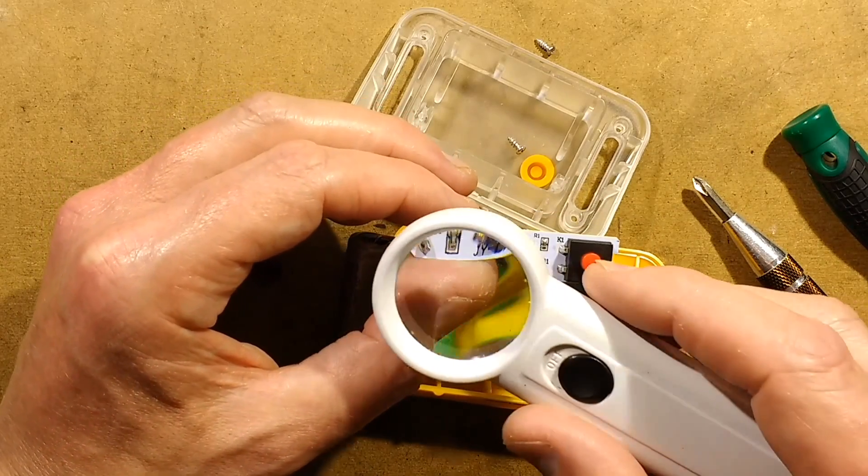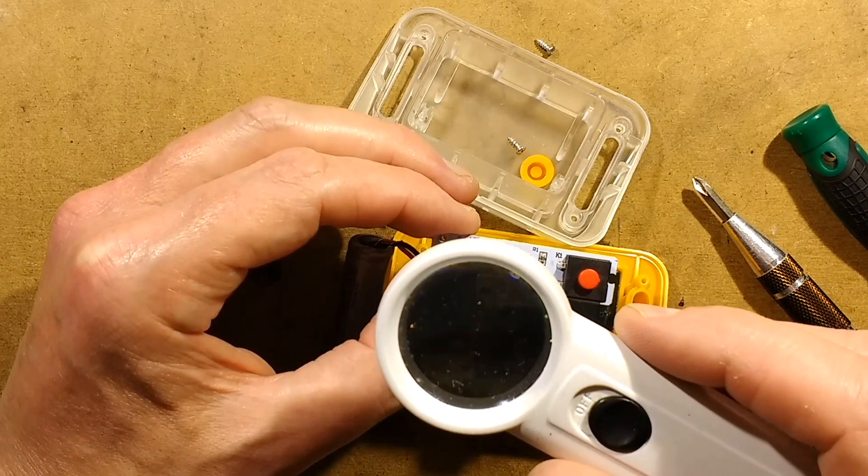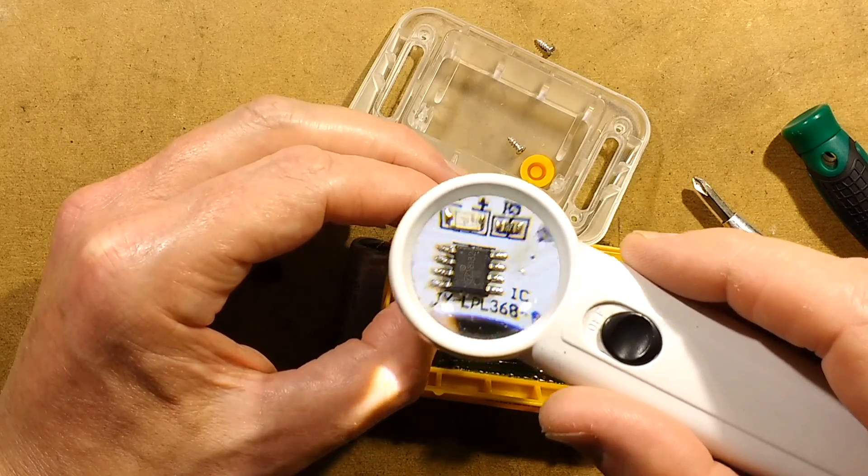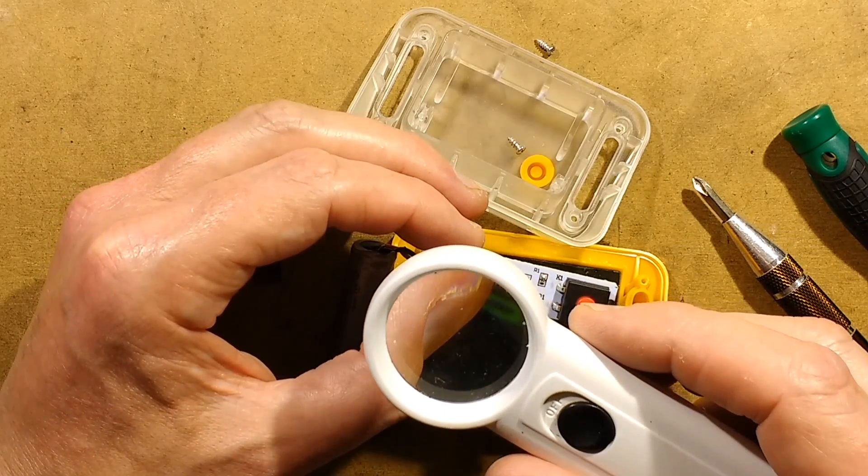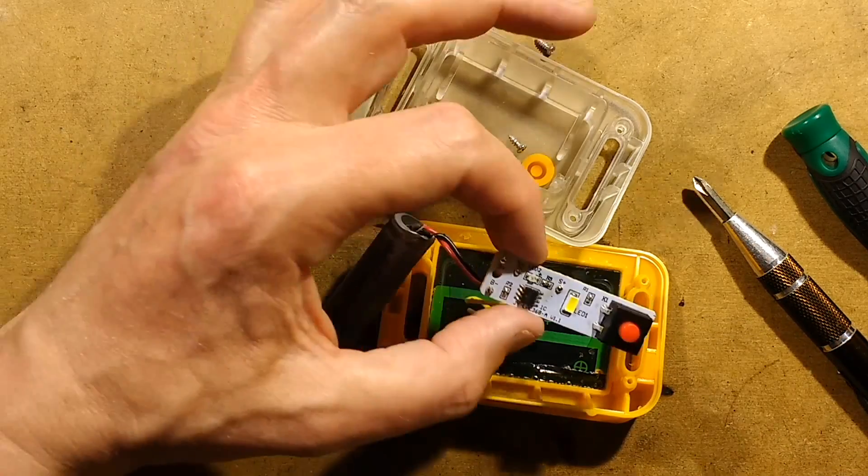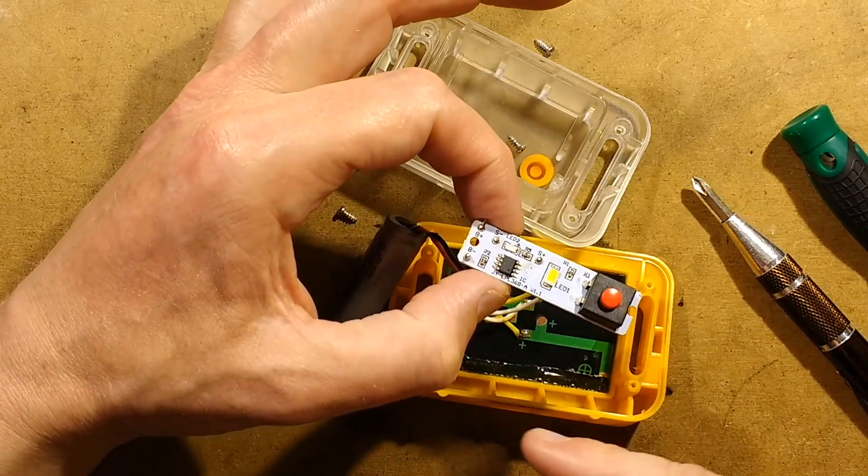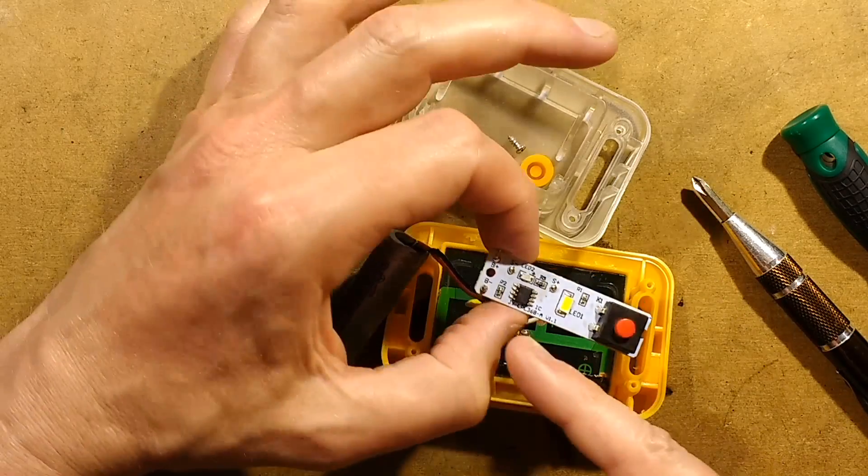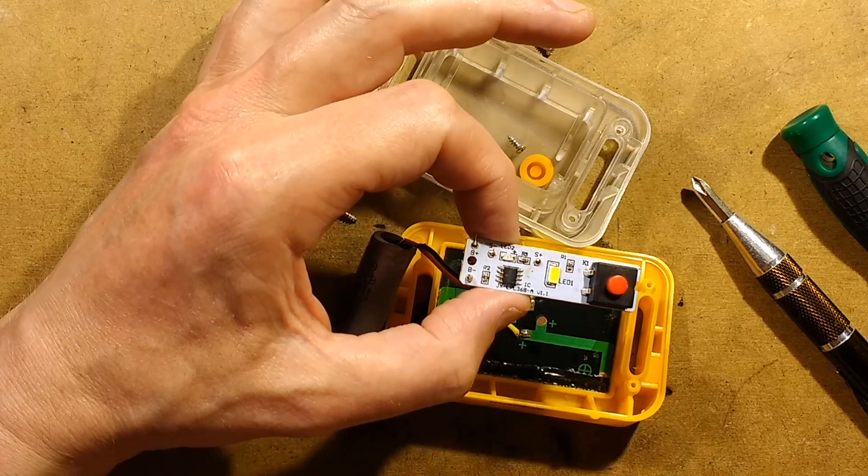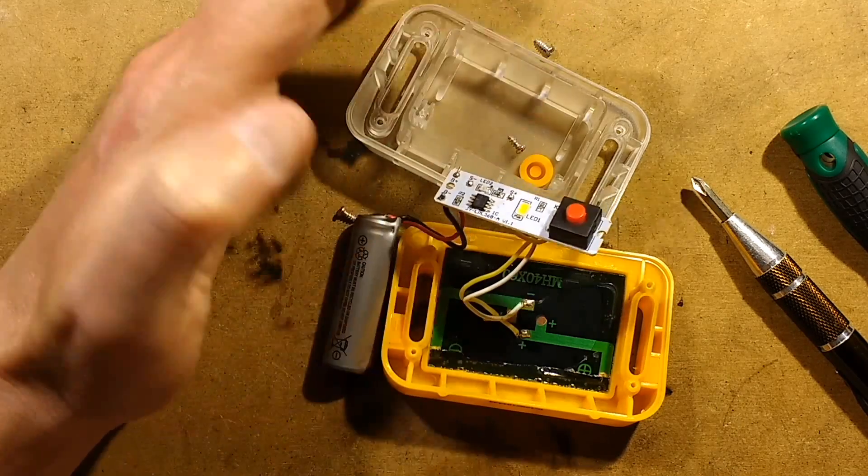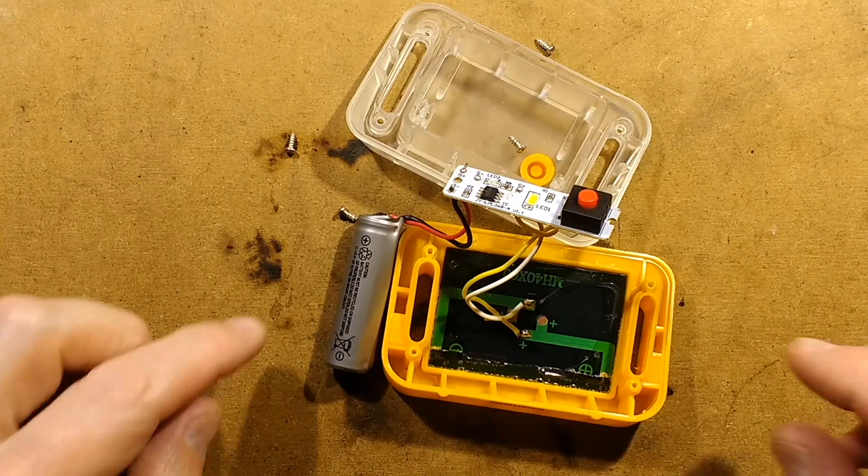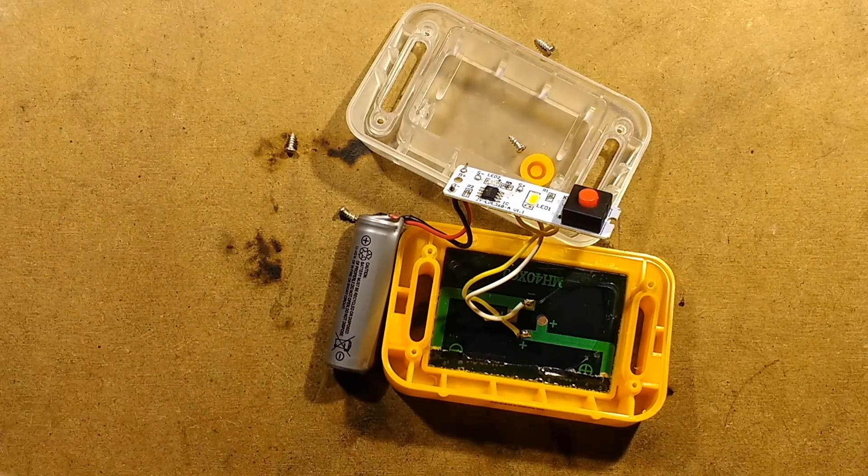The chip is a YX-8182. YX make the solar garden light chips. We've got the button, not much else. Just a couple of resistors, the LED, which I wouldn't expect much more with these chips because they tend to integrate everything. I'm going to see if I can find the data sheet for that chip and reverse engineer this.